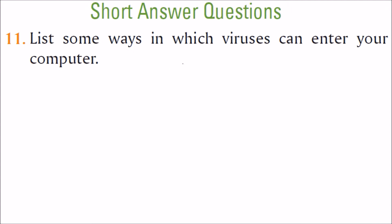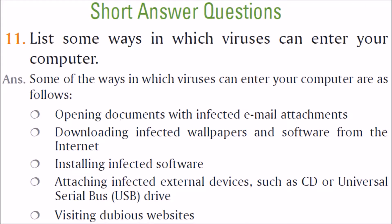List some ways in which viruses can enter your computer. First, if you open infected documents as email attachments. If you download infected wallpapers. If you install software that is already infected. If you attach an infected external device like CDs, DVDs, or USB drives that are already affected. And if you visit dubious websites.